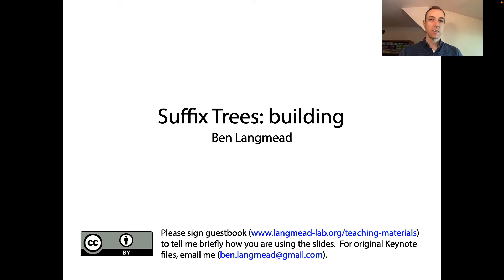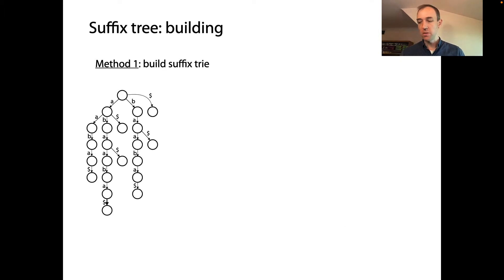Having seen what suffix trees are, let's now talk about how to build them. When we first saw suffix trees, we thought of them in terms of starting from a suffix trie and then making it smaller. Coalescing paths of nodes that have only one child and then replacing the labels of the edges with these pairs of integers.